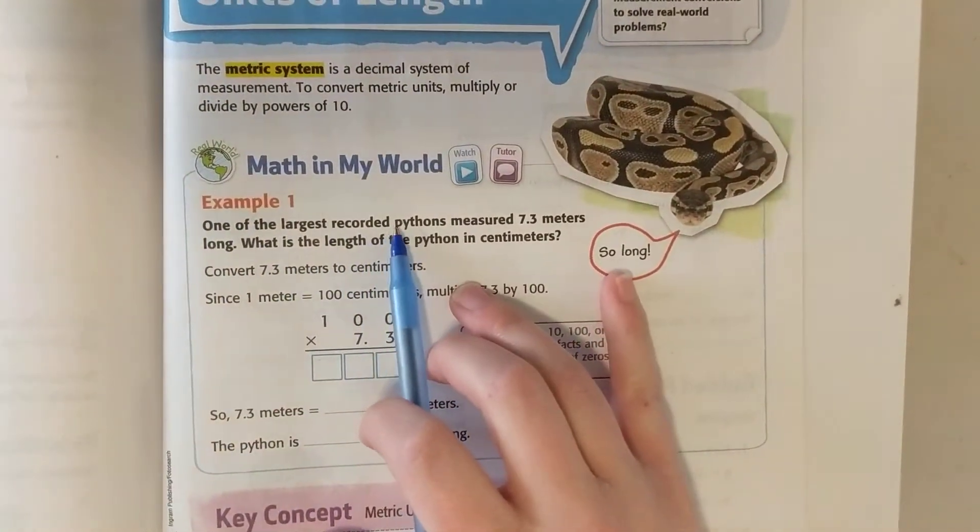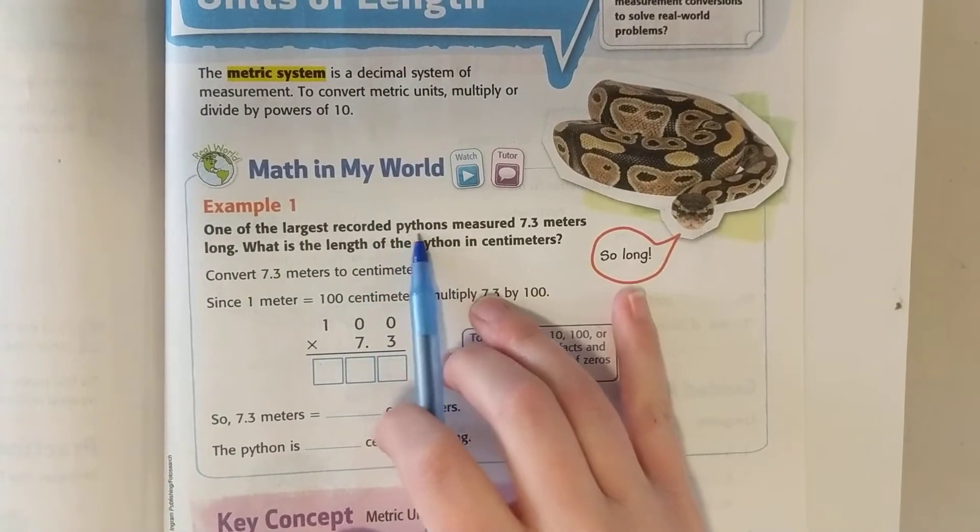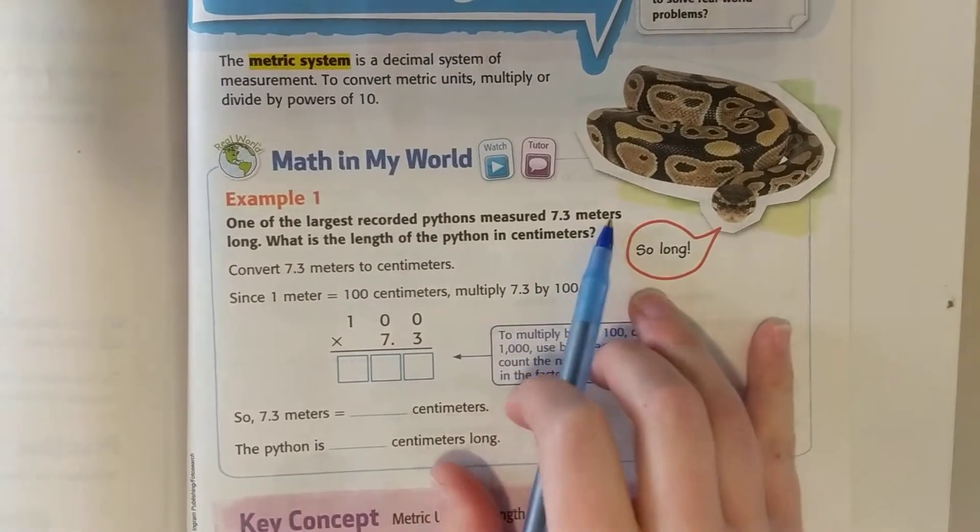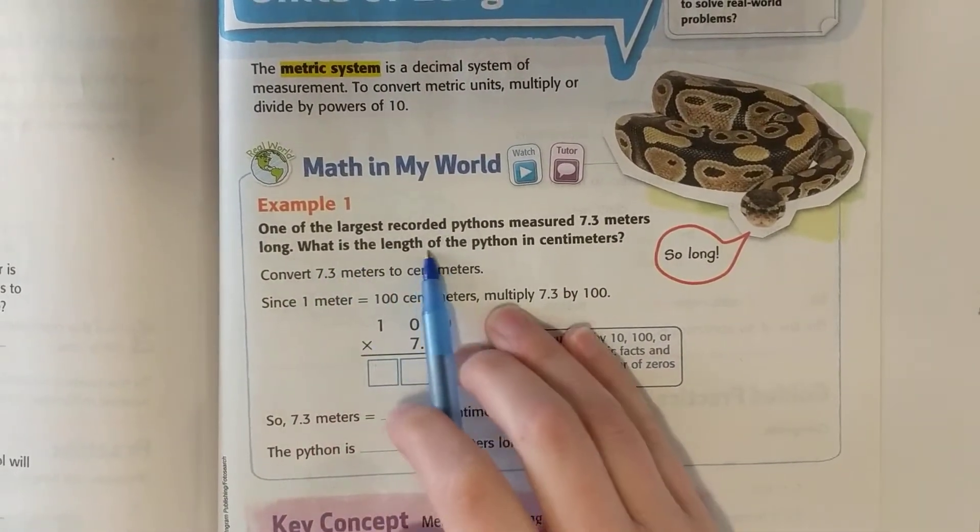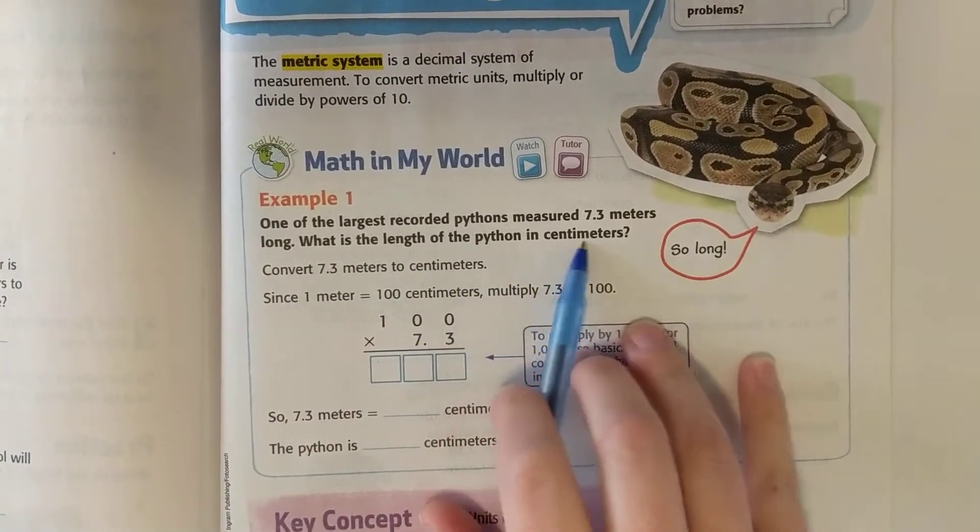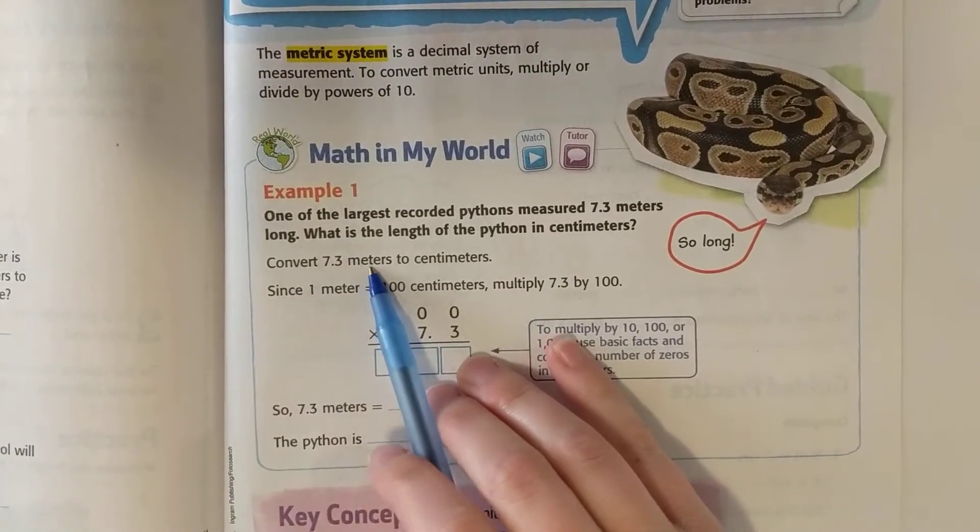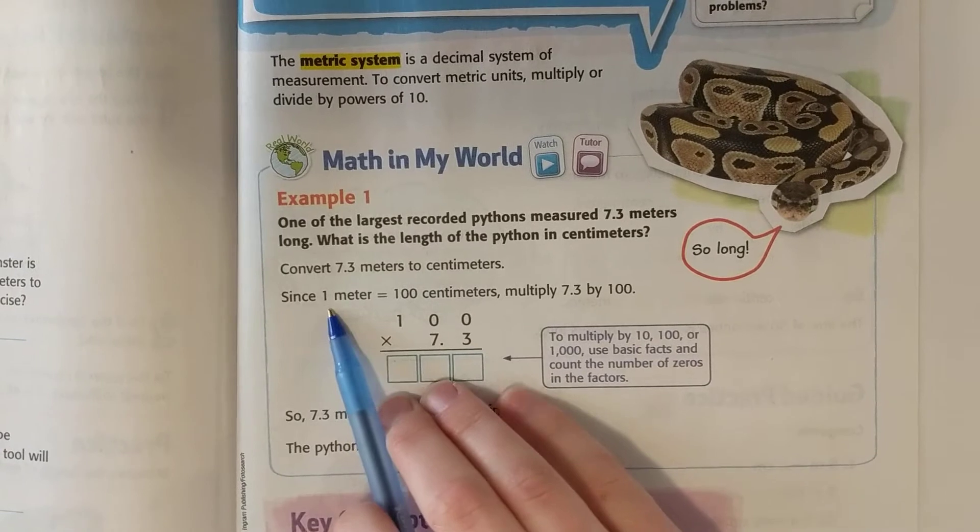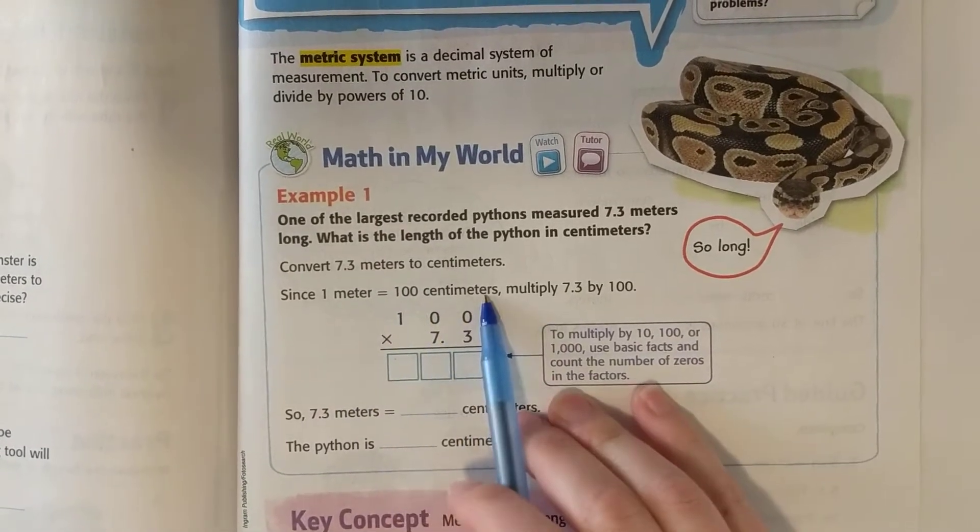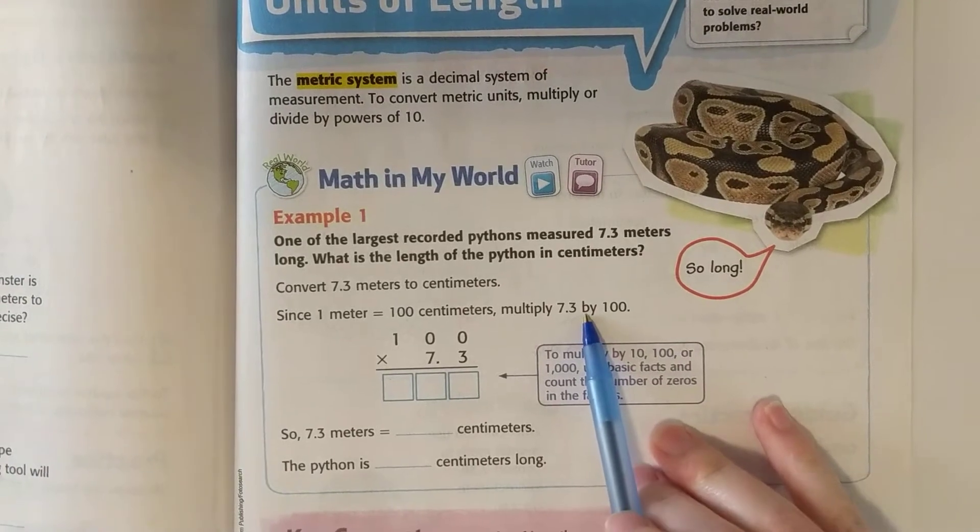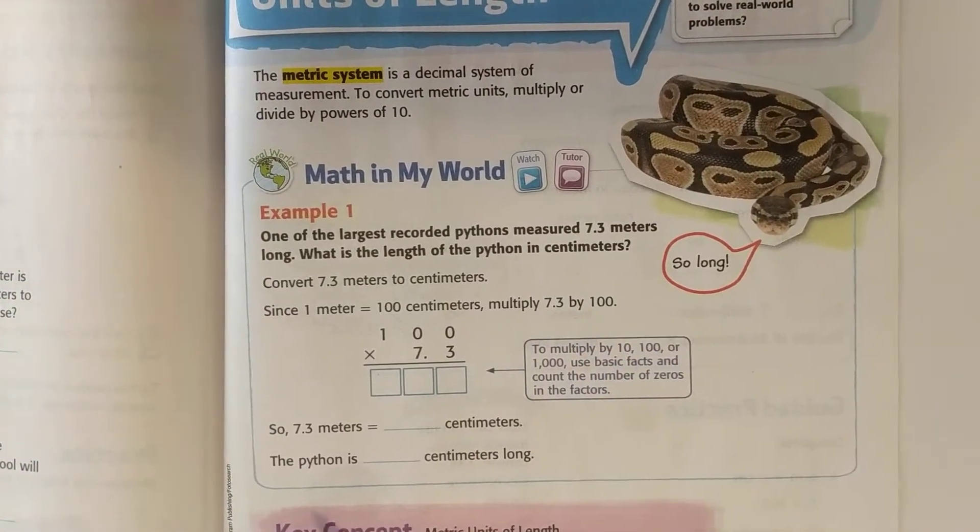One of the largest recorded pythons measured 7.3 meters long. What is the length of the python in centimeters? So we're converting 7.3 meters into centimeters. One meter equals 100 centimeters. We're taking 7.3 and since we're going to a smaller unit, our number is getting bigger and we're multiplying by 100.